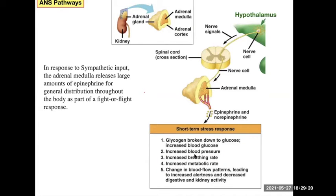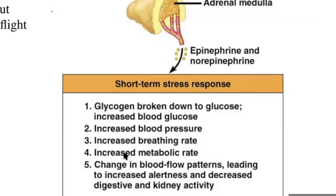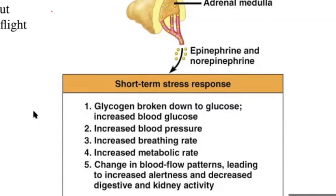The response to epinephrine: increased blood pressure because heart rate is faster, increased metabolic rate and blood glucose because your cells are working harder. You're changing your blood flow patterns towards your muscles and heart and away from your digestive and kidney systems — basically gearing your body for action and giving it the energy to do it through breathing, oxygen, and glucose for aerobic respiration.